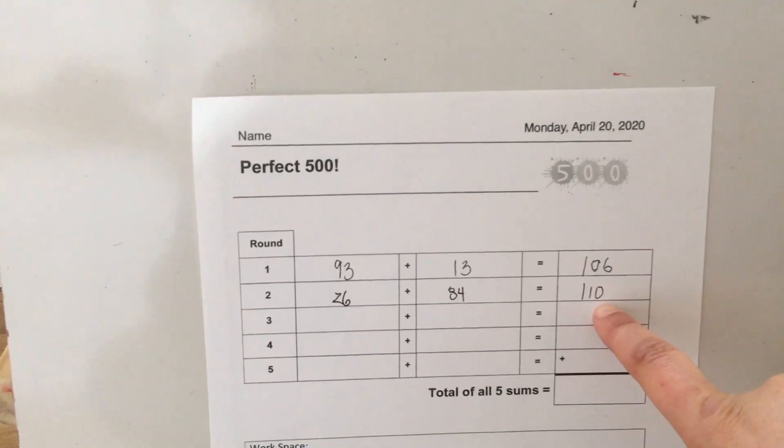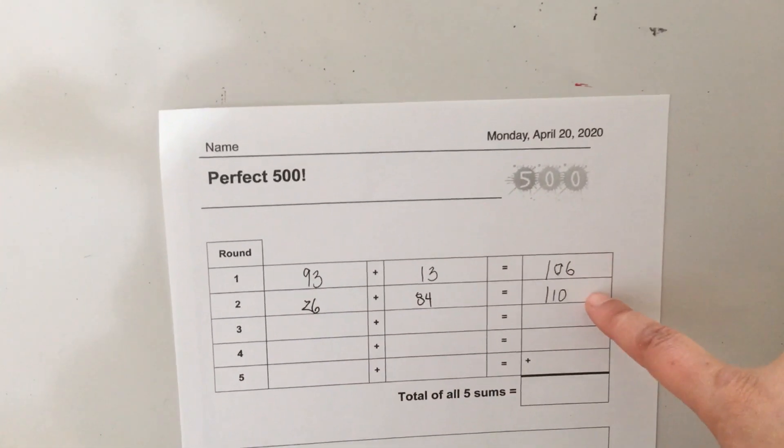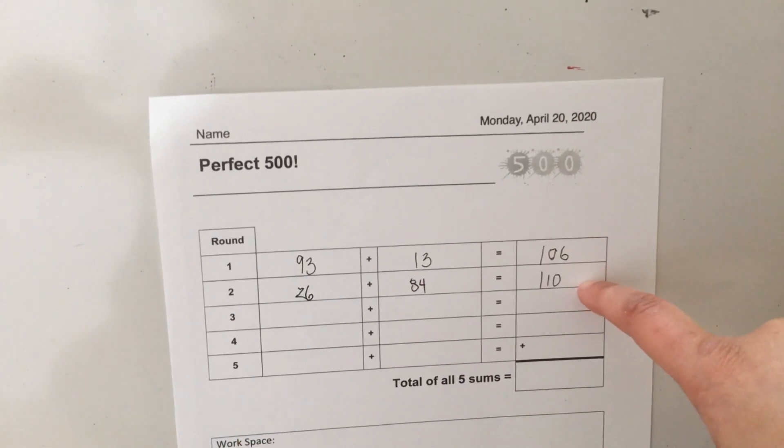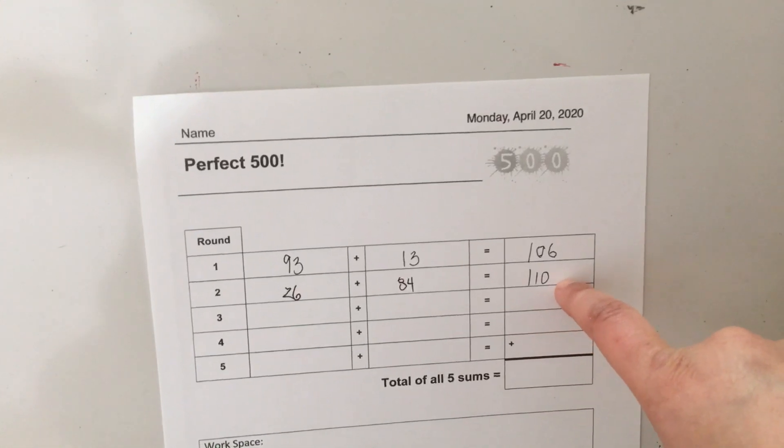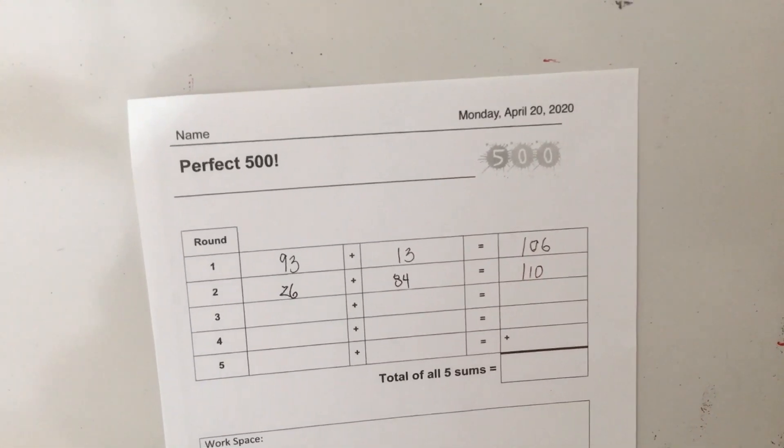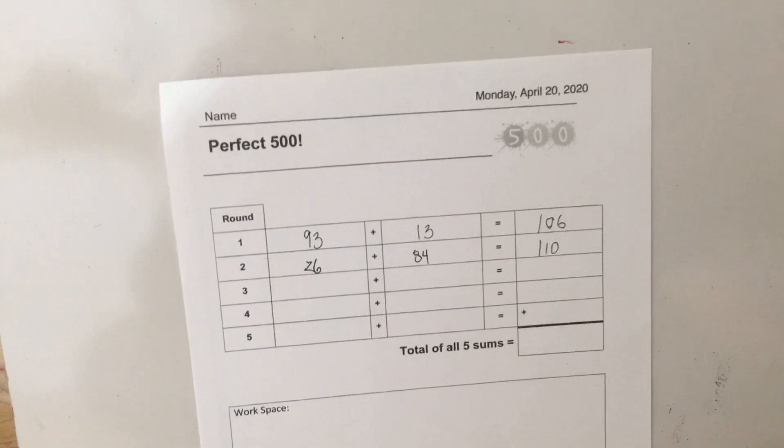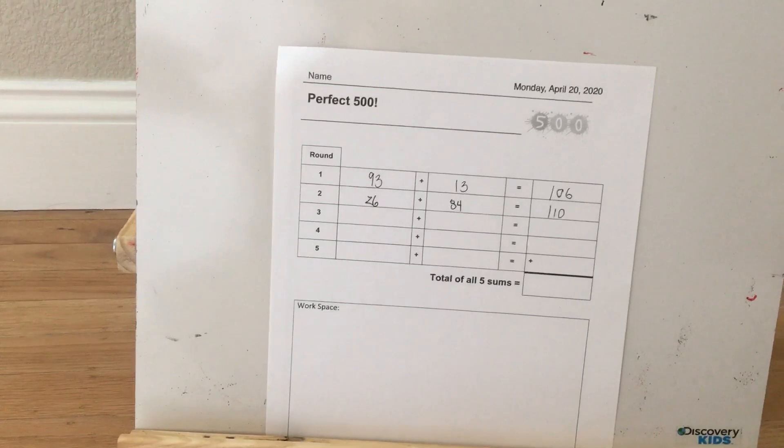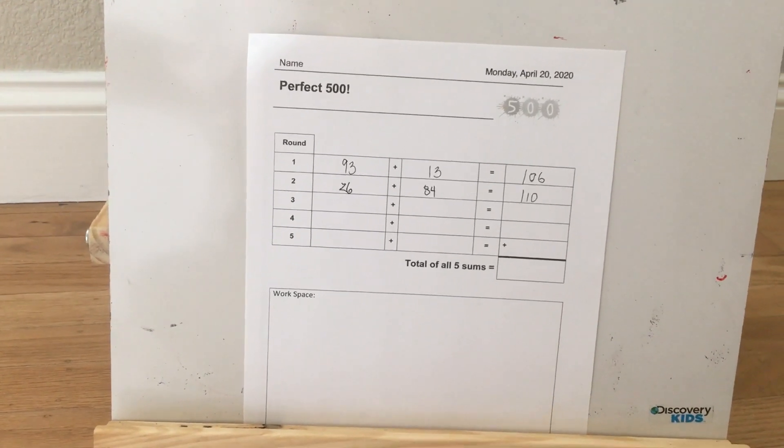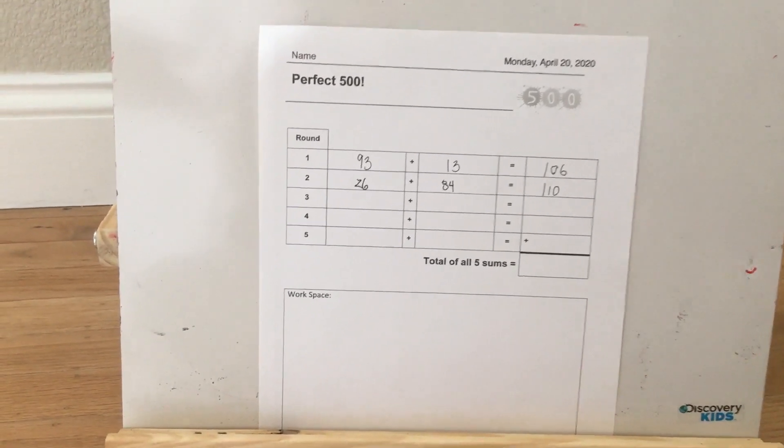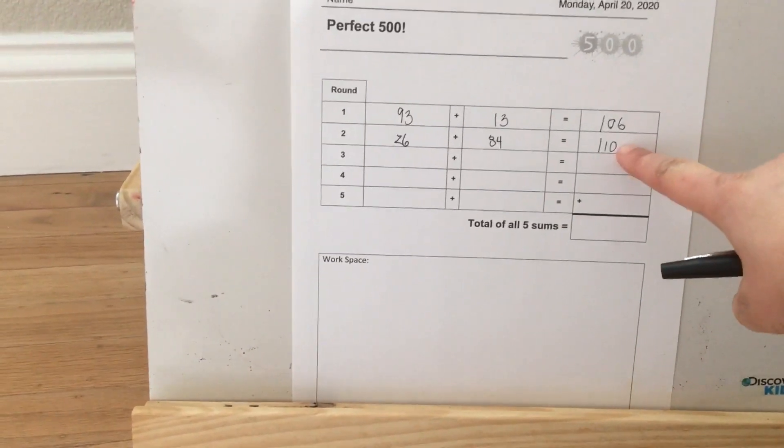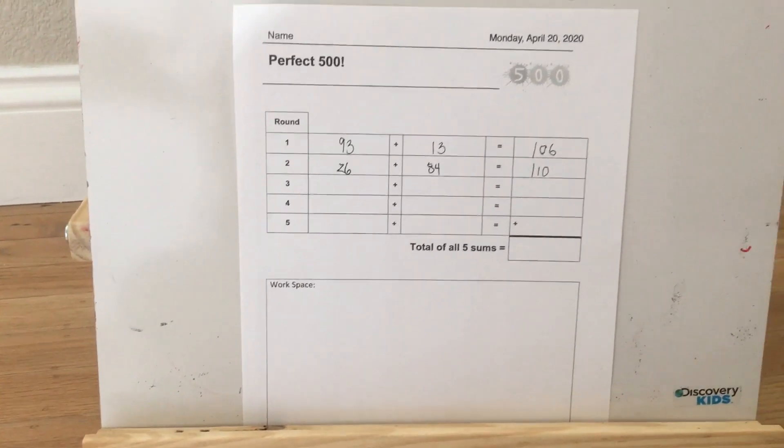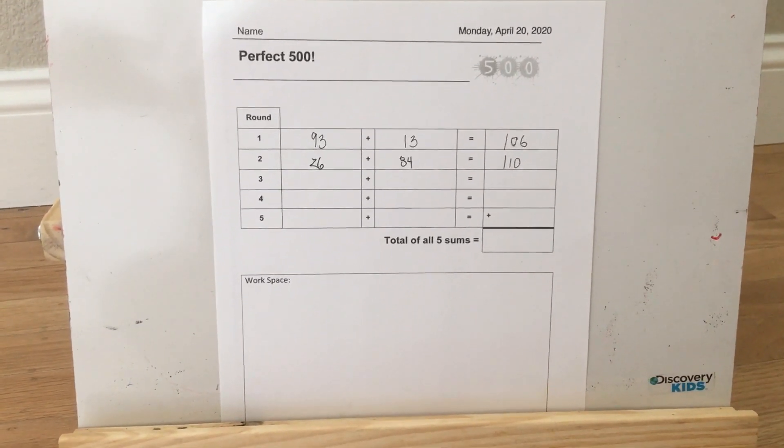Looking at this right now, if I had 100 for each round, I should be at around 200 to keep me on track to getting close to 500 in the end. Right now I'm 16 over. So I have 216 if I were to add these up, which means my next round, if I only come up with 80 something, that would be pretty good. So that's the strategy that you can think about when you're playing this game.